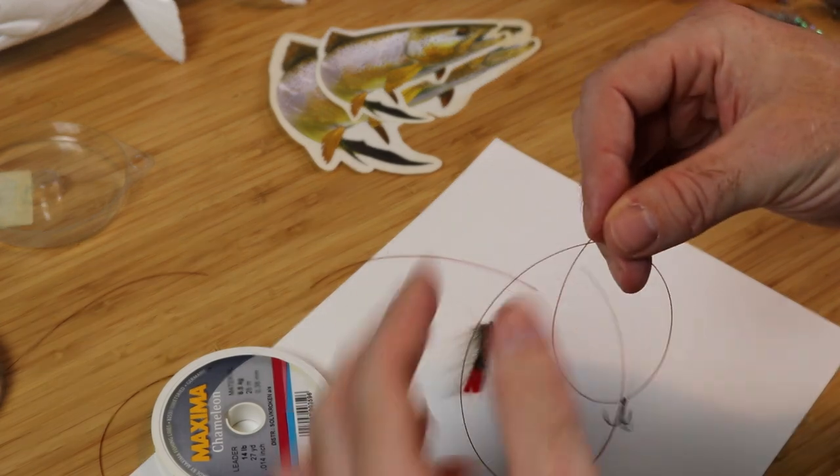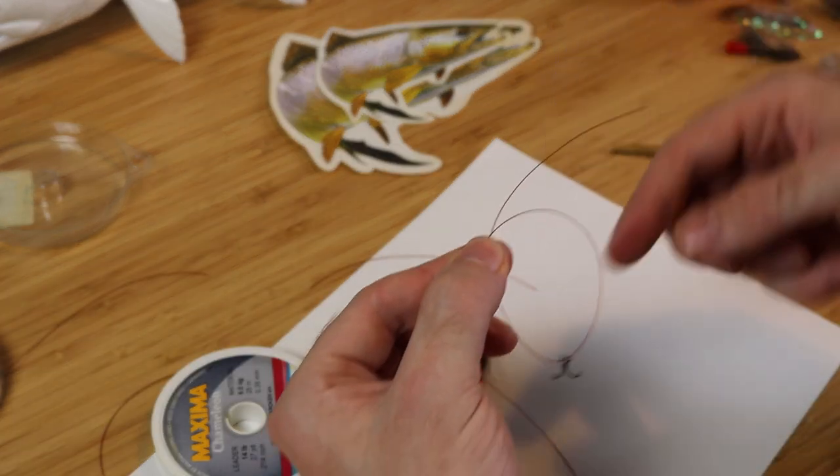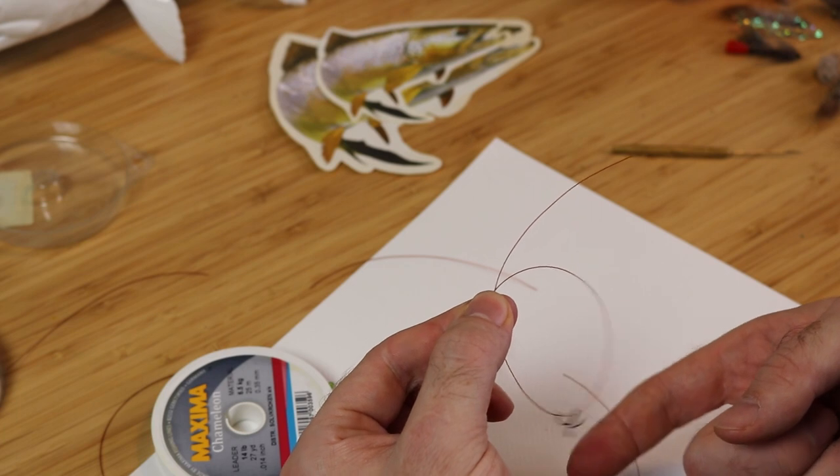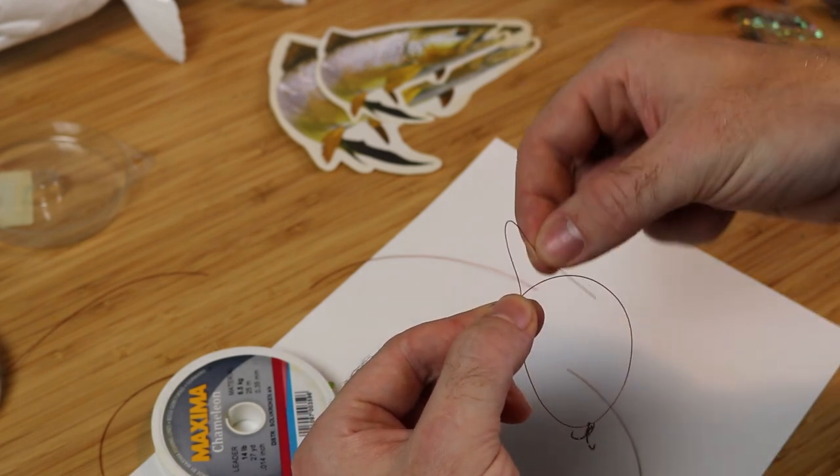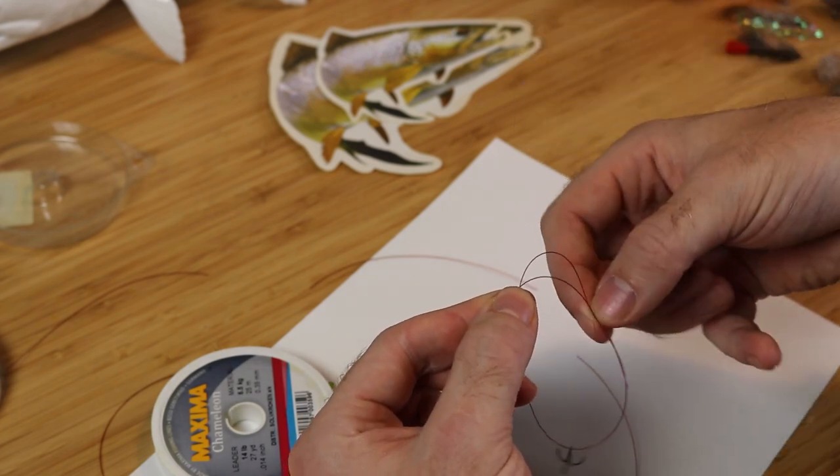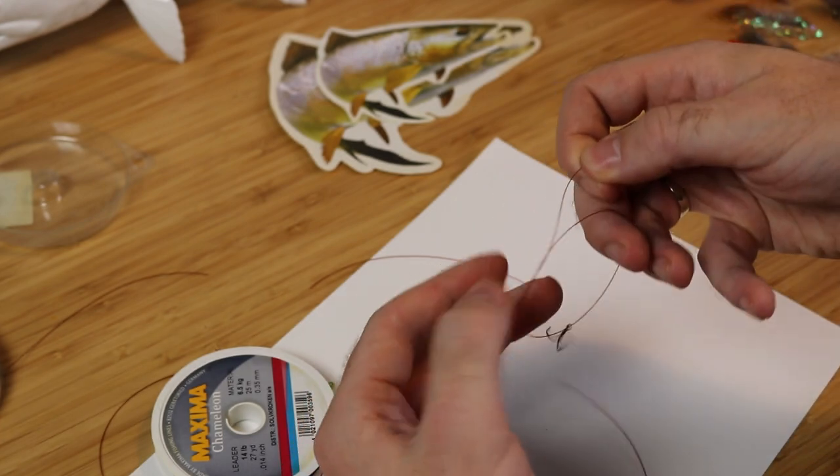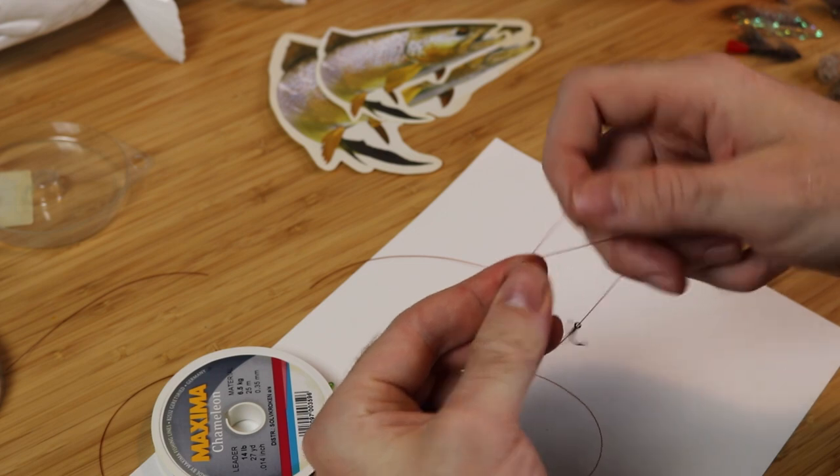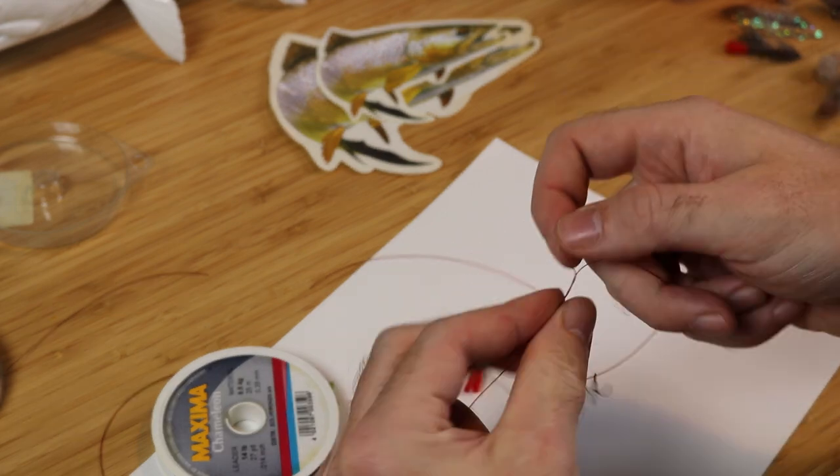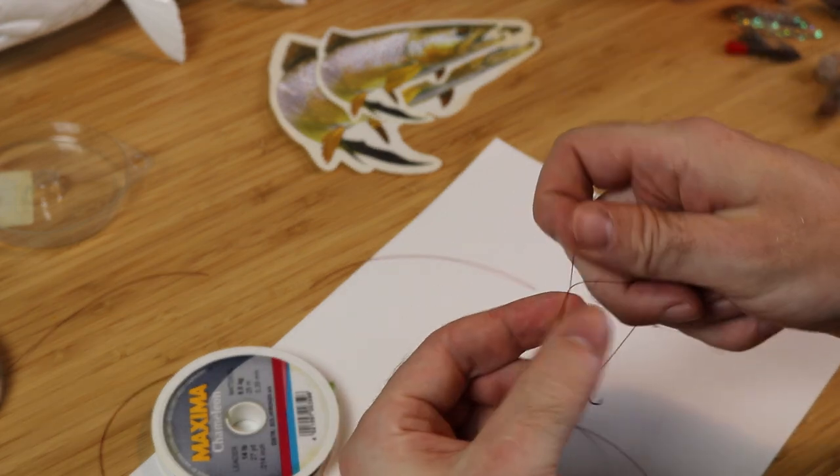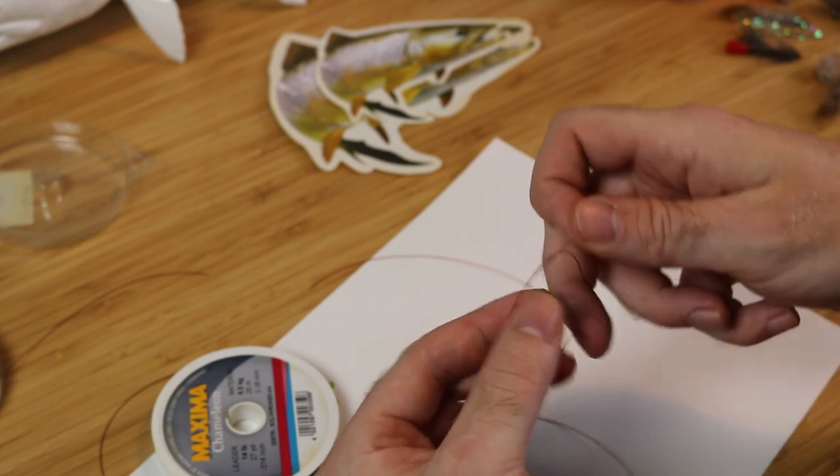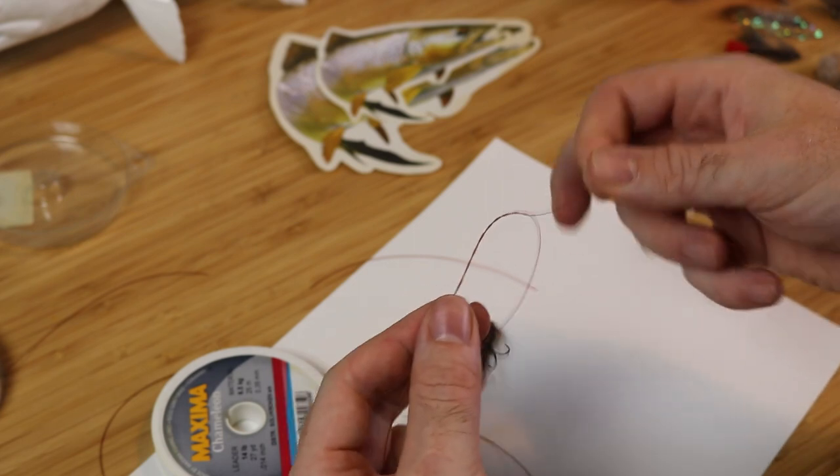What you then do is, you just form a loop, like so. Take the end, feed it through the loop and we will be doing that 5 times, so 1, 2, 3, 4, 5 times, pull it in a little bit.